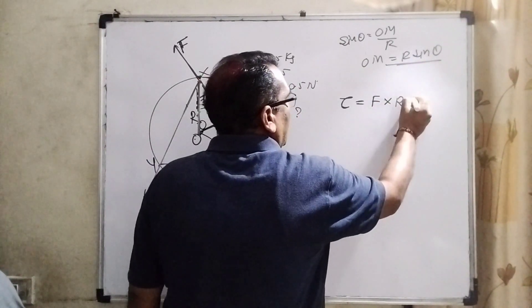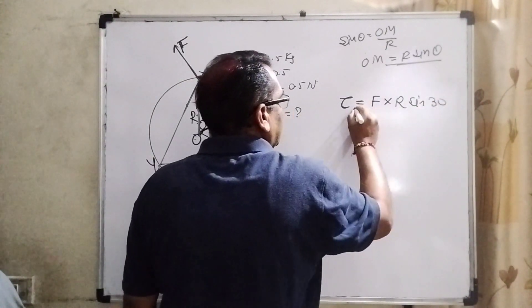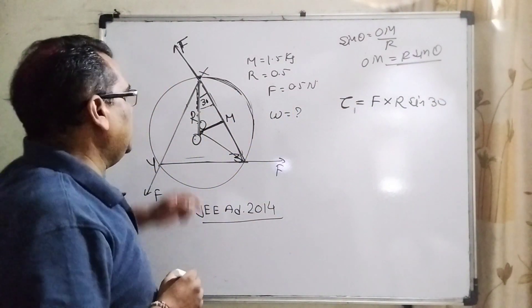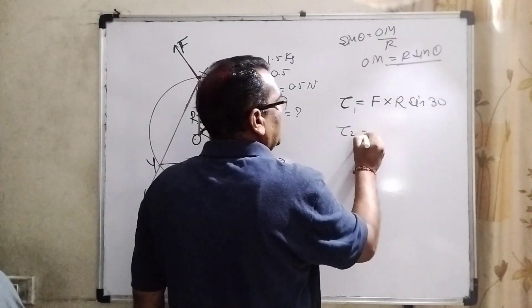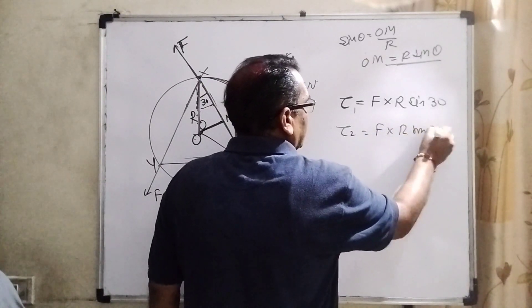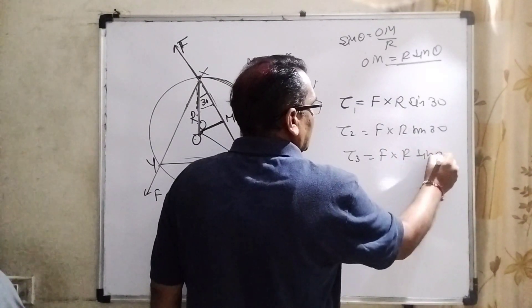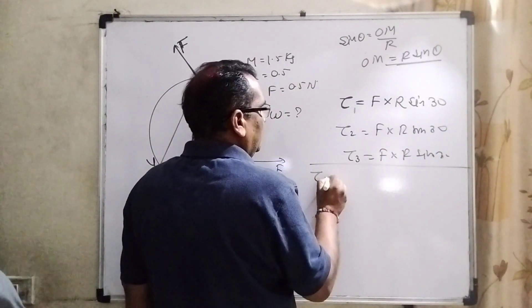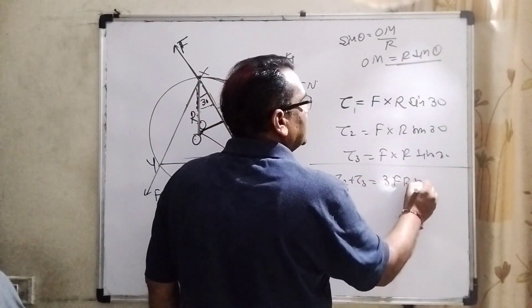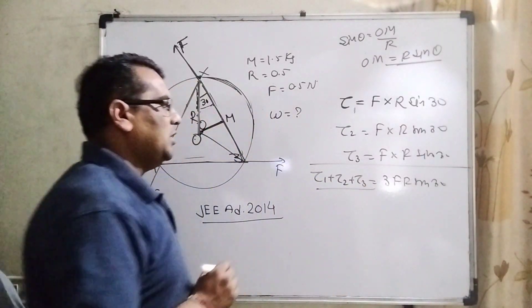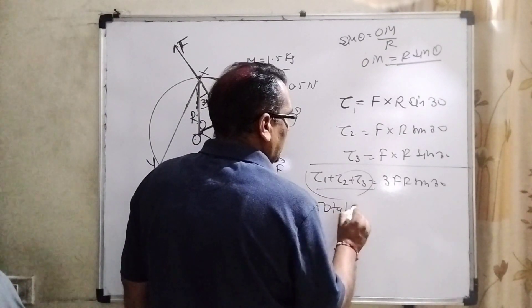So therefore, put here R sin 30 degrees, right? This is the tau 1. But you can see that all the forces and all the distances are the same. So therefore, similarly tau 2 equal to also F R sin 30, tau 3 equal to F R sin 30. Then net tau, we can say 3 F R sin 30. Then tau 1 plus tau 2 plus tau 3 can be considered total torque.